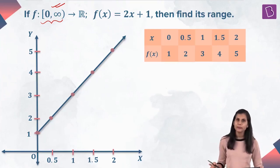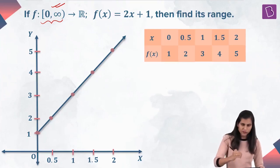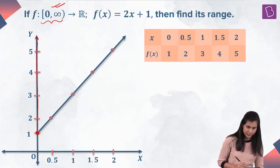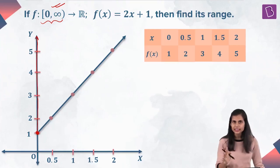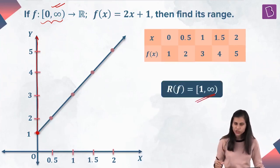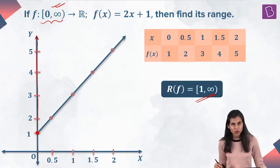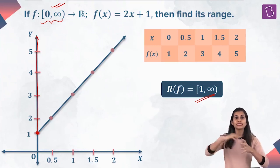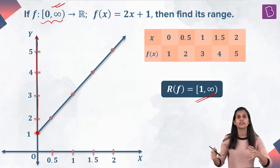Now examine the nature of the graph as it moves from bottom to top. As it moves from bottom to top, it is actually sweeping all the real numbers from 1 to infinity. That means the range of this function is all real numbers to the right of 1, including 1 — that is, all real numbers lying in the closed interval [1, ∞). So when you input all the non-negative reals inside machine f, the output is all reals greater than or equal to 1.